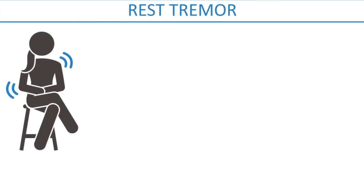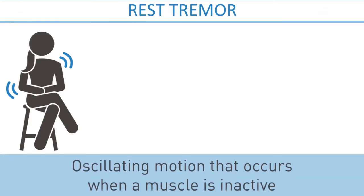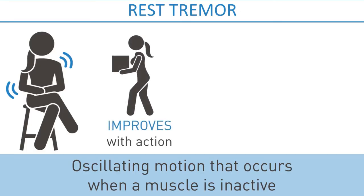Rest or resting tremor is an involuntary oscillating motion that occurs when a muscle is inactive and supported against gravity, and goes away with action or movement. Voluntary action may cause the rest tremor to abate.